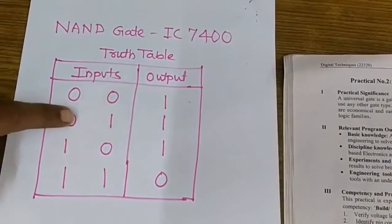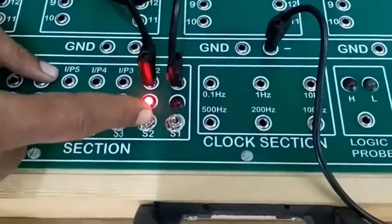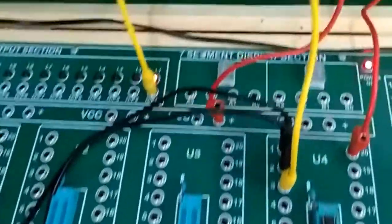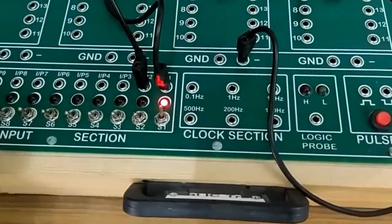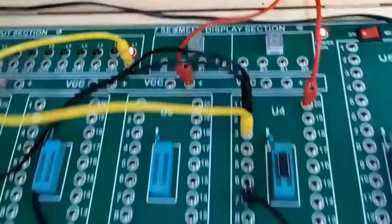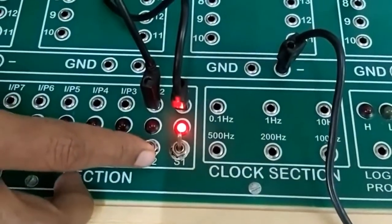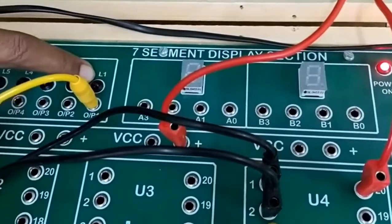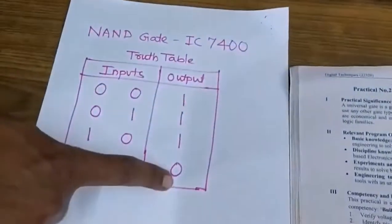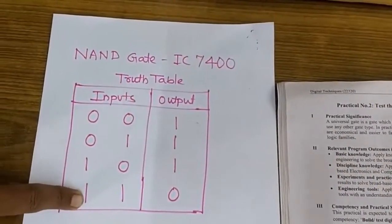Moving further: first input is 0 and second input is 1 — output is 1 again. For the third combination, first input is 1 and second input is 0 — output is again 1. Finally, for the last condition when both inputs are 1, output should be 0. Making both inputs 1, the LED turns off and output is 0. That completes the truth table demonstration of the NAND gate.